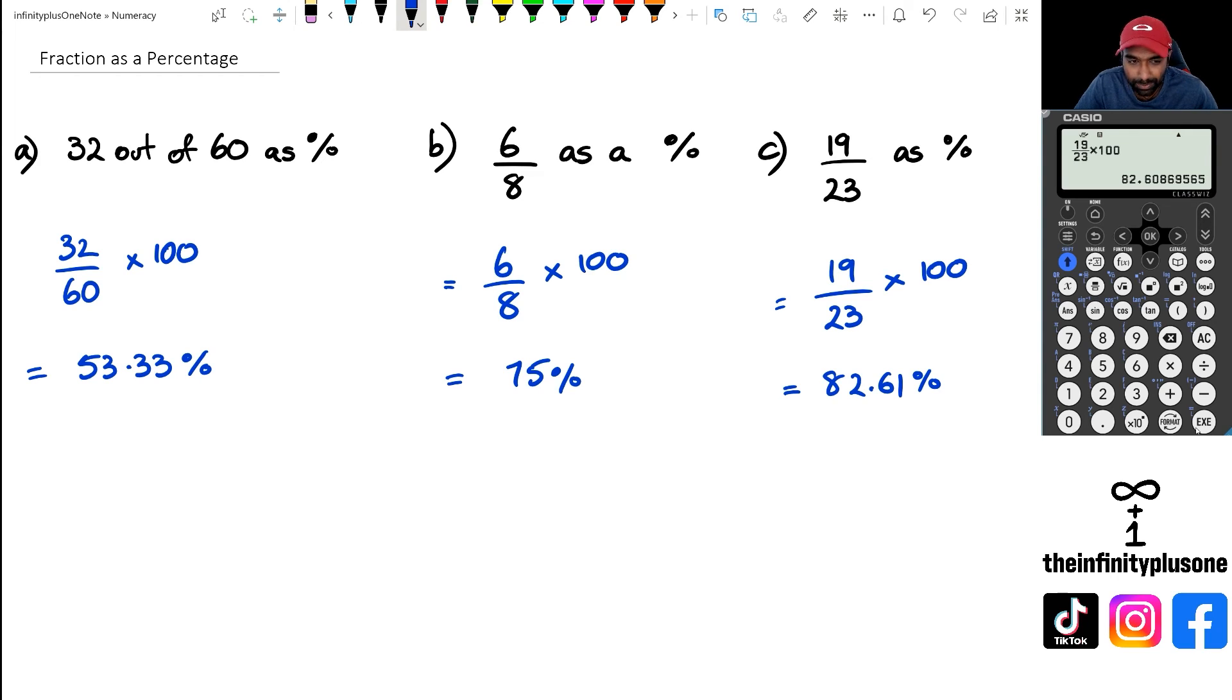So just with the rounding, folks, just be aware that most of the time we tend to do two decimal places, but again it depends on the context of the question. Sometimes you might need a few more, so you just got to keep an eye on that.